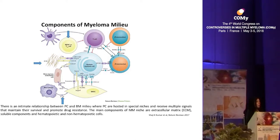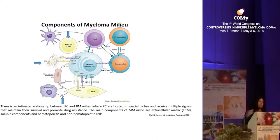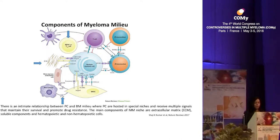First, we have the extracellular matrix formed basically from glycoproteins, laminin, and fibronectin. We also have to consider the role of soluble components, including cytokines and growth factors. Third, we have to consider the cells, which include hematopoietic cells — dendritic cells, macrophages, MDSCs — but also non-hematopoietic cells such as osteoclasts, osteoblasts, and bone marrow endothelial cells.